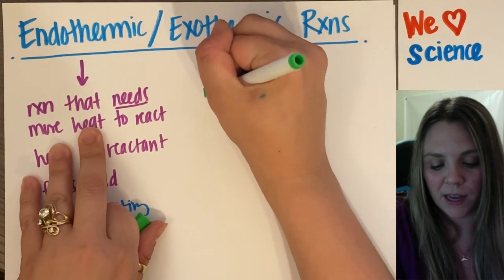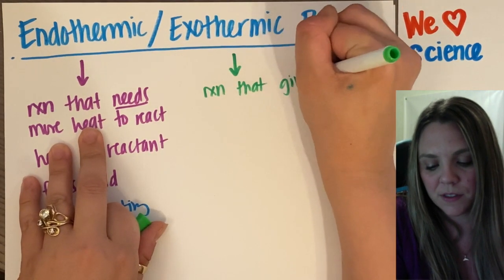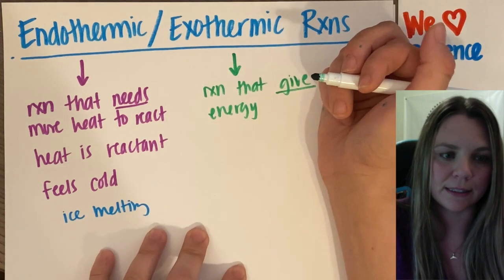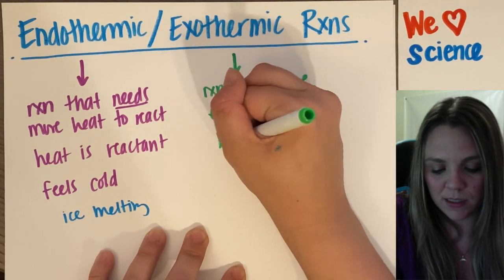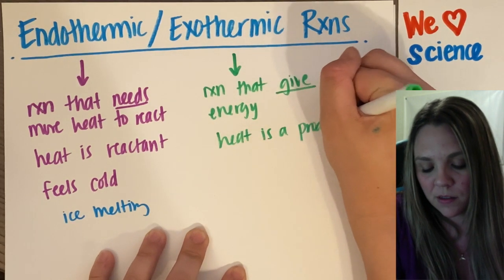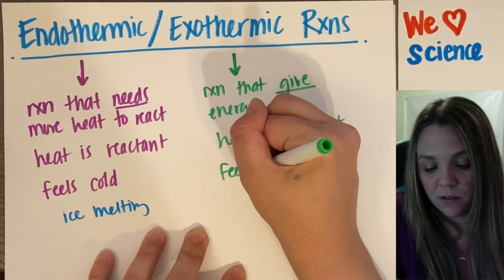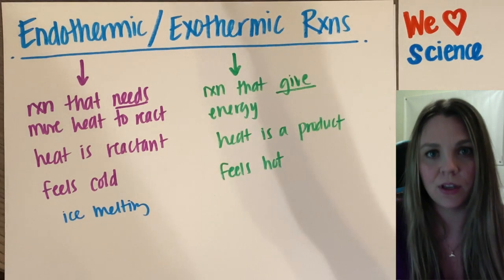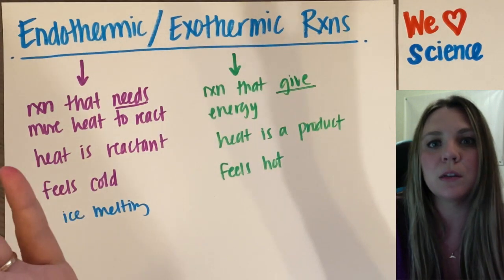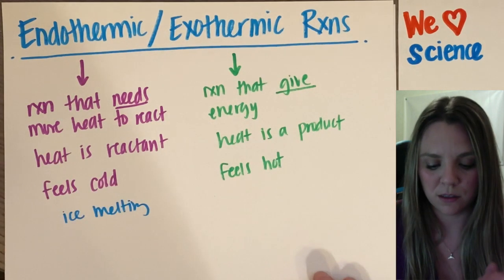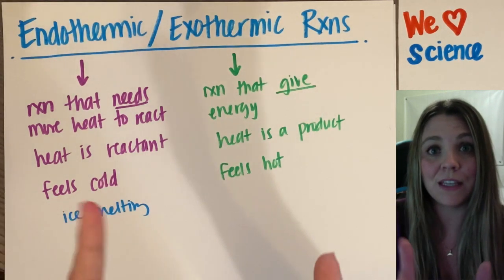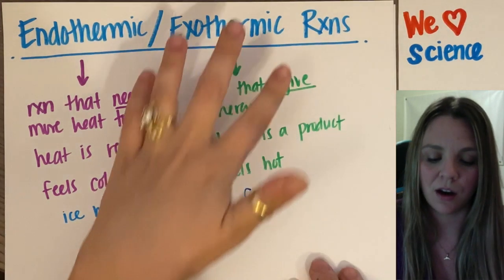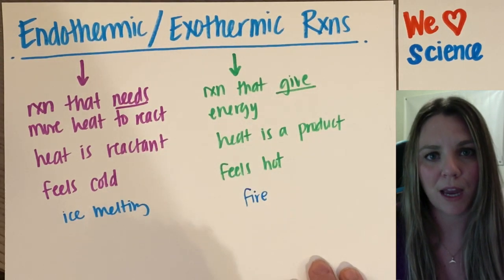Exothermic is the exact opposite. It's a reaction that gives energy, and it gives off more energy than it needs to react. So heat is a product, and it feels hot — which makes sense, because if it's giving away more energy, it's releasing more energy than it needed to react. This would be any kind of fire, combustion, explosion — all the fun things. That would be a good exothermic reaction.